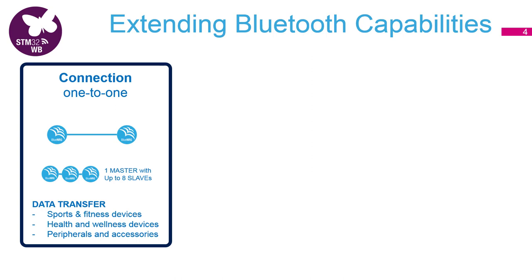One central can be connected to more than one peripheral, but these peripherals cannot directly exchange information — at least not natively on a low level. The use case here is, for example, a fitness tracker connected to your phone.